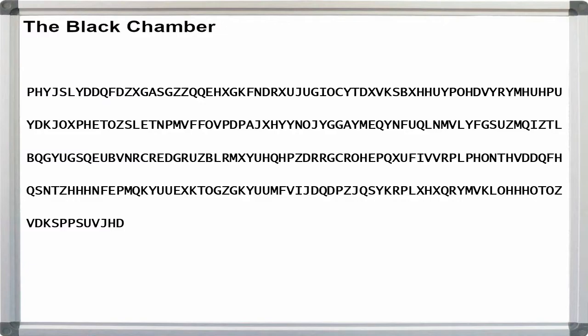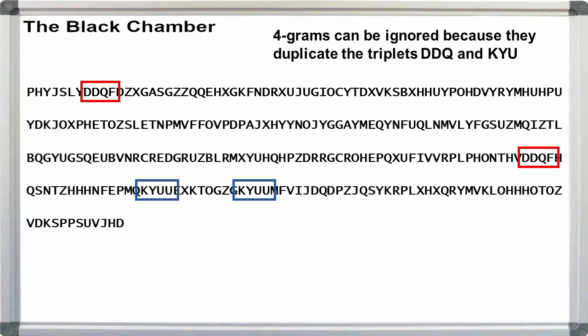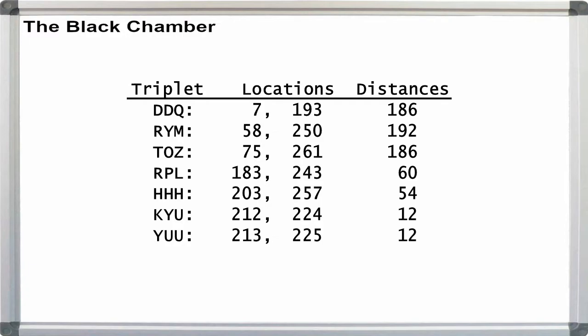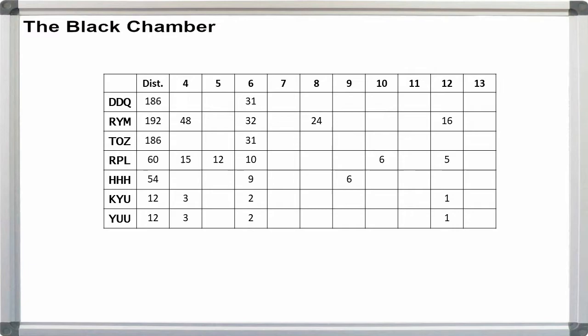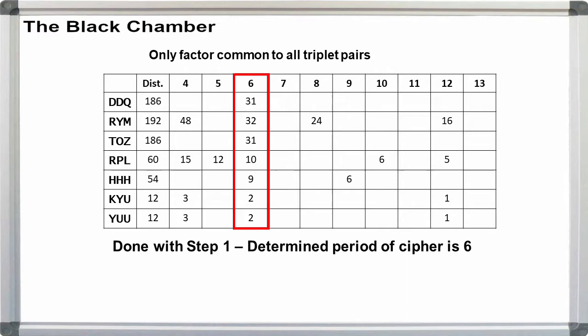Looking at the cipher, we can immediately spot a couple of repeated triplets, including DDQ and RYM. There are two repeated groups of four letters, but we can ignore them if we focus on the triplets for a Kasiski attack. Let's first compile the list of triplets and their positions in the cipher. Putting together a chart showing the common factors, we'll start by considering period sizes between 4 and 13. The only factor common to all of our triplets is 6. Assuming that our cipher is period 6, we are done with step 1.